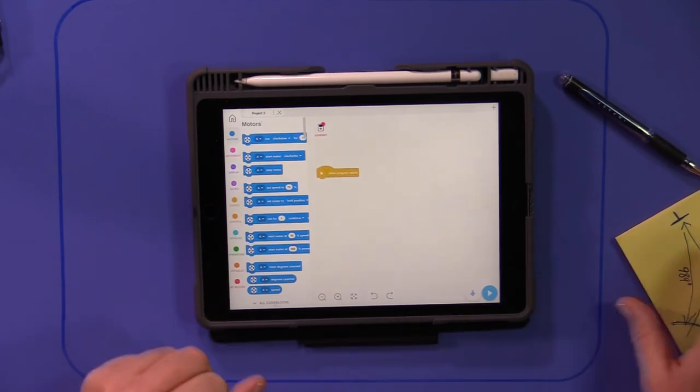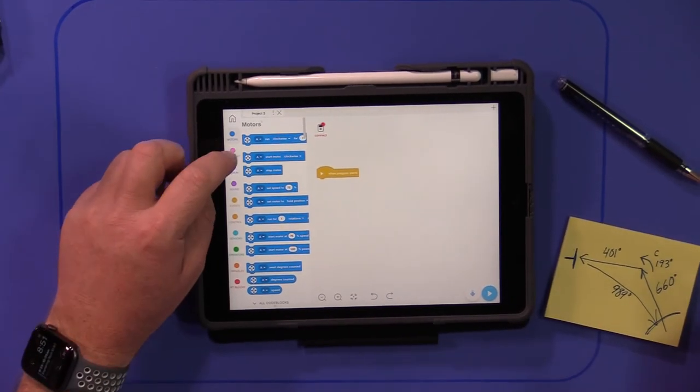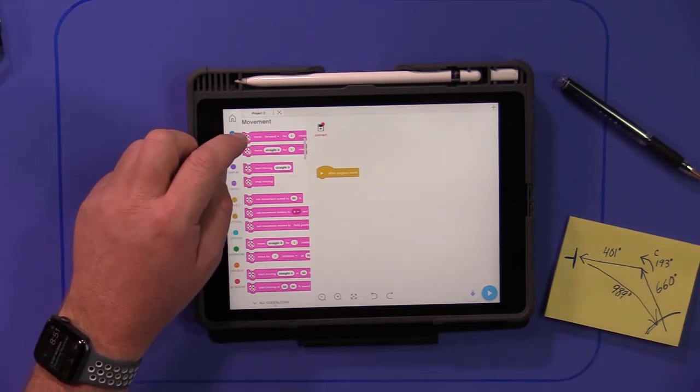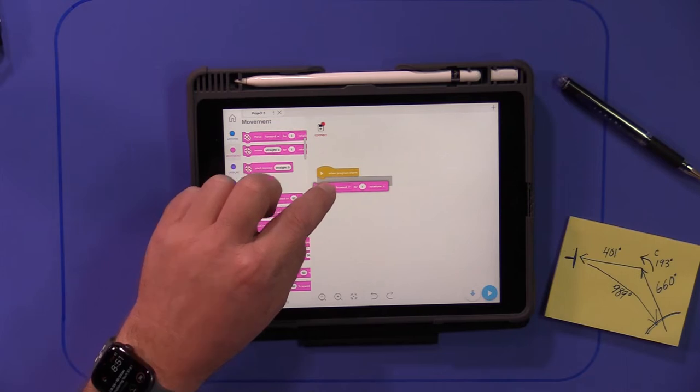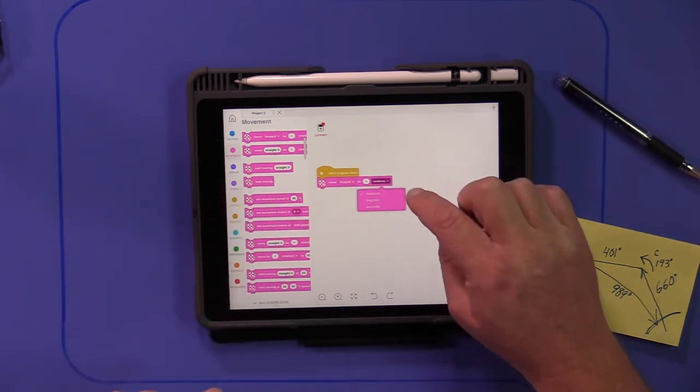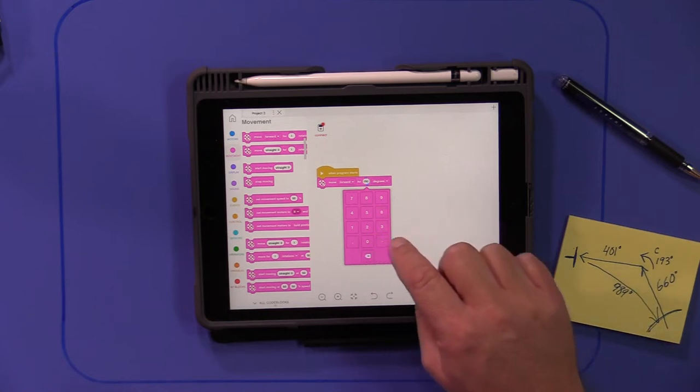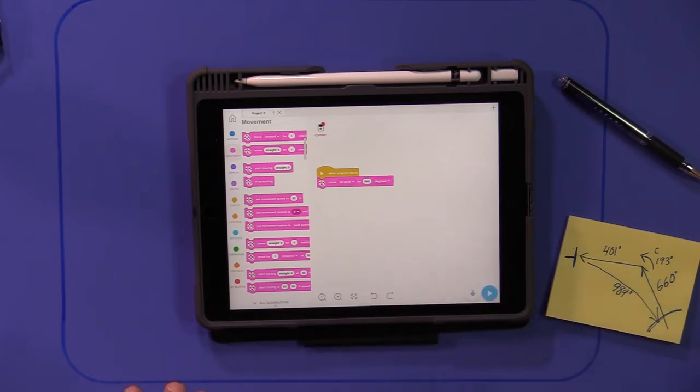Okay, so let's see. We need to move. So I'm going to go with the pink ones here. Move forward. Okay, so let me just grab that one. So we need to move forward and change it from rotation to degrees. And I know I need to move forward 660 degrees. Okay, boom. So it's going to move forward.